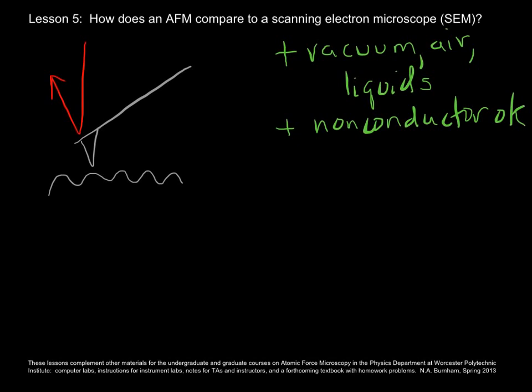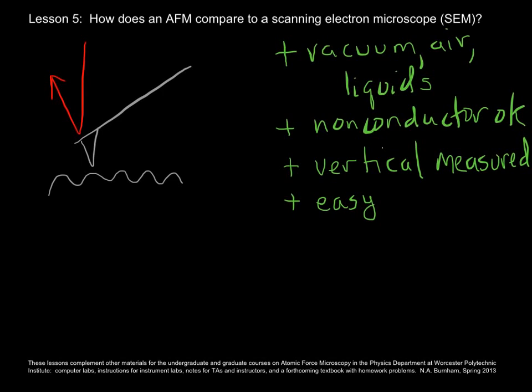Whereas in SEM the image you get is just the electrons that come out, in AFM it's possible to get an accurate vertical measurement — you can measure a feature's height in an AFM. And because you don't have to be a conductor, the sample preparation is easy.